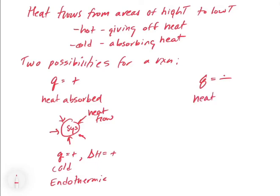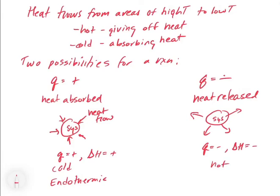So now if we have the other case, Q is minus, heat is being released. In this case, the system is going to give off energy to the surroundings. That's going to be our heat flow. So Q is going to equal a negative. If this is taking place at a constant pressure, delta H is going to be negative. This is going to feel hot. And this is what we call exothermic.